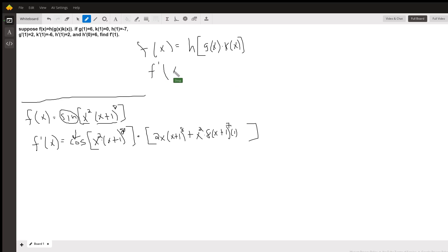Define f prime. I'm going to take the derivative of h, which I don't know what h looks like, so I'm just going to call it h prime. Everything in the brackets will remain the same, just like it did when I took the derivative of the sine. So g of x times k of x.